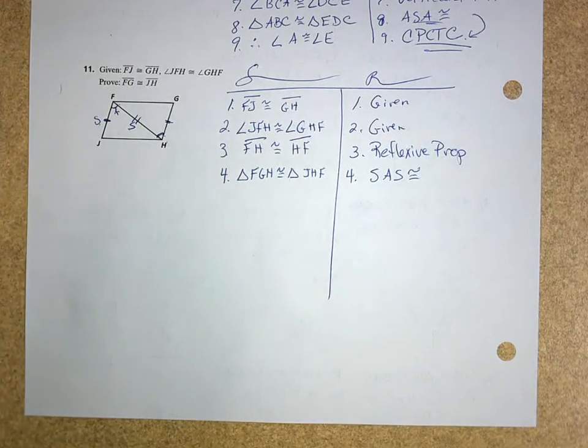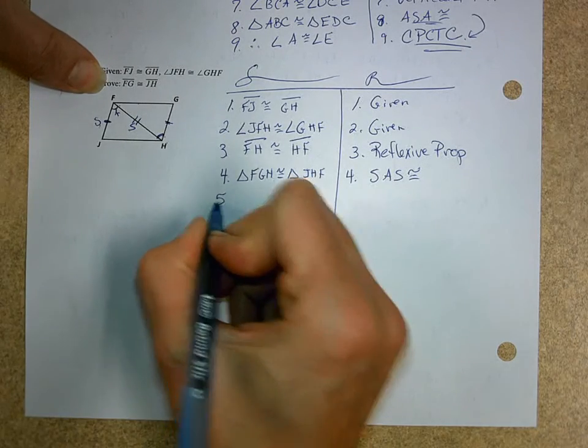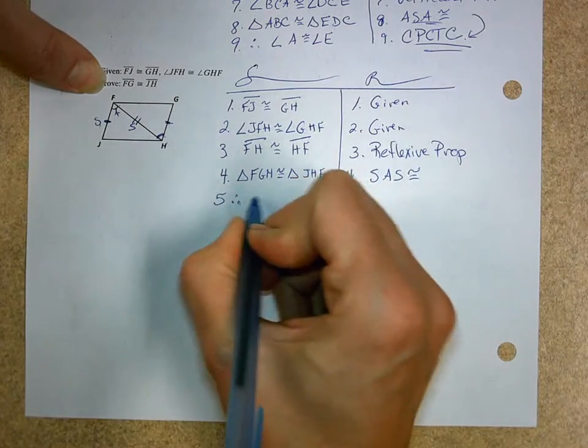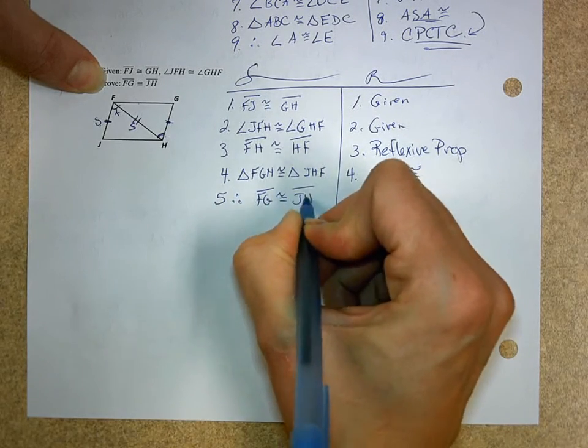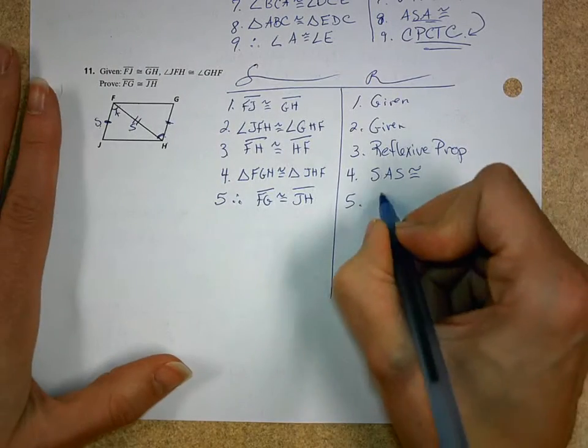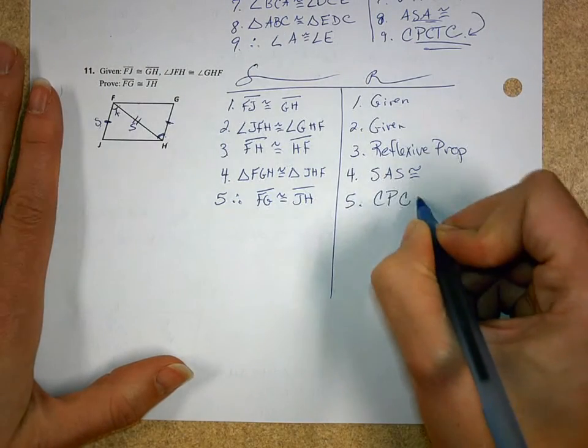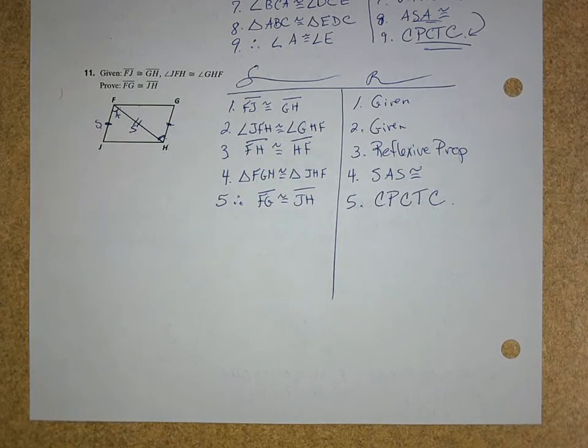Now, because those two triangles are congruent, what do I know about segment FG and segment JH? They're congruent, mm-hmm. And the reason why is the reason we'd be using for the very last step every single time of this lesson. Corresponding parts of congruent triangles are congruent. Make sure you say those words out loud. It will help you keep them memorized.